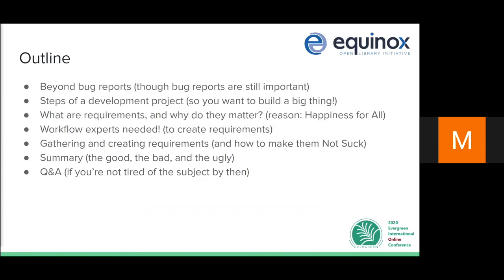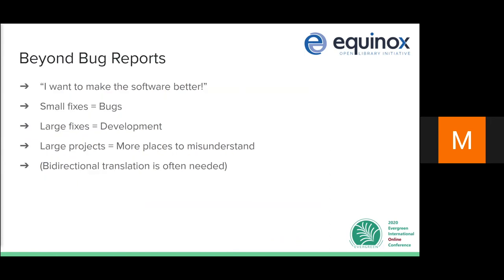Here's a brief outline of what I'm going to cover. Thinking about requirements starts with going beyond bug reports. Bug reports are a great way to start making software better — creating them, commenting on them, adding heat. Bug fixes versus full development is really more a difference of degree rather than kind. Development items are sometimes more like wishlist wants than needs, though that can be a fine line. There are differences in terms of effort and process, and larger improvements require more development.